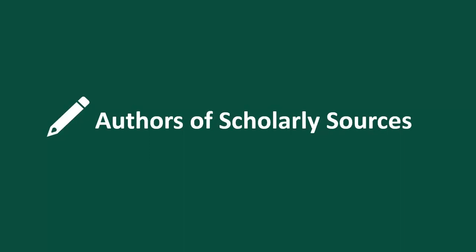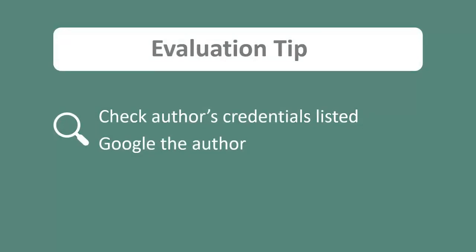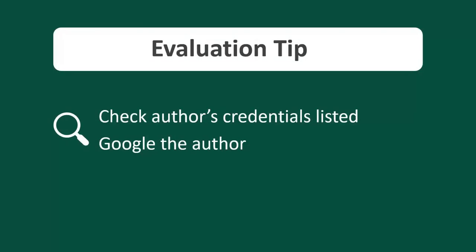Next, we'll talk about the authors of scholarly sources. The authors will be experts within their field, such as a doctor, scientist, or professor — people with high levels of education. You might recognize experts like Dr. Anthony Fauci, Toni Morrison, and Jane Goodall, whose research can be found in scholarly journals across medicine, literature, and science. Keep in mind, experts don't necessarily have to be well known or a public figure — your own professors who publish research in scholarly journals are considered experts too. When evaluating, check the author's credentials; if the article doesn't list them, you can look them up. A university name or email next to the author typically indicates they are a professor or researcher at that institution.